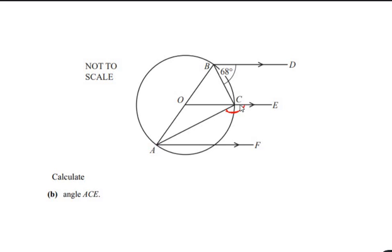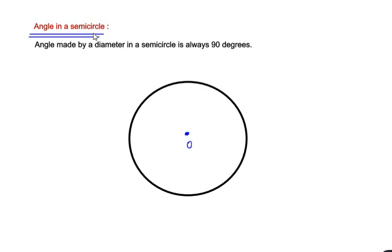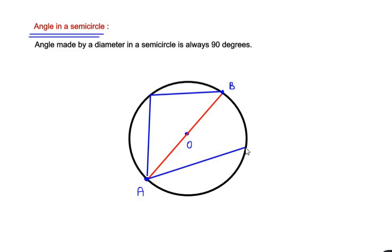To find this angle, let us use a circle theorem known as the angle in a semicircle. This theorem states that the angle made by a diameter in a semicircle is always 90 degrees. I have drawn a circle with center O and a diameter AB. If we draw an angle from the two endpoints of the diameter to any point on either side of the semicircle, it always makes an angle of 90 degrees.